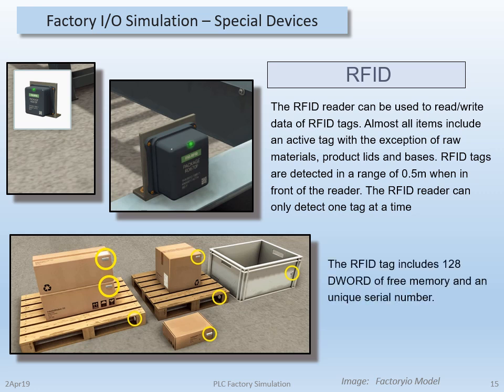What is really unique here is that the RFID tag on the object contains 128 words of free memory and a unique serial number. The unique serial number is a sequential number generated as the tag is created by the emitter. The 128 words of memory are user-writable and stay with the RFID tag throughout the simulation.